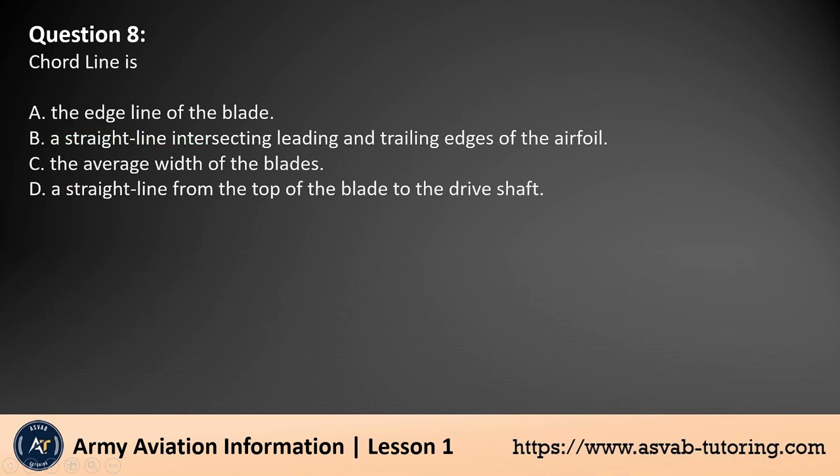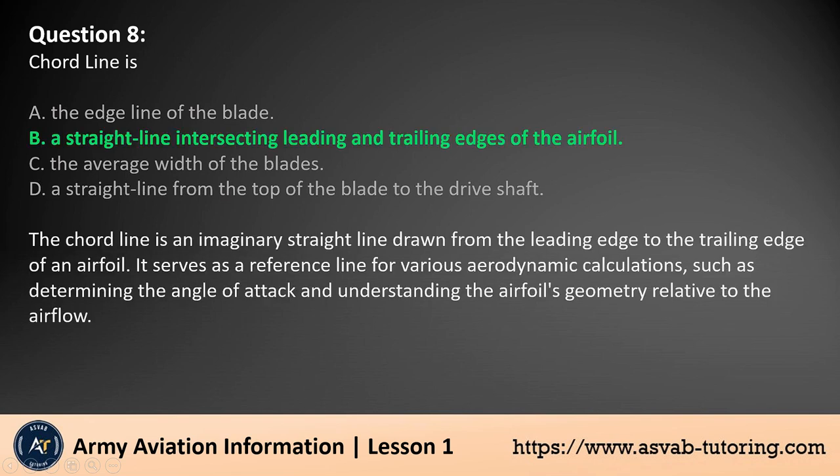Question 8. Cord line is: A. The edge line of the blade. B. A straight line intersecting leading and trailing edges of the airfoil. C. The average width of the blades. D. A straight line from the top of the blade to the drive shaft. The answer is B.